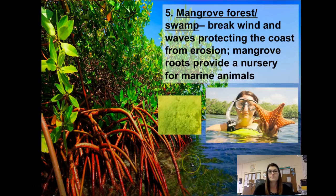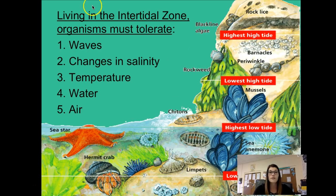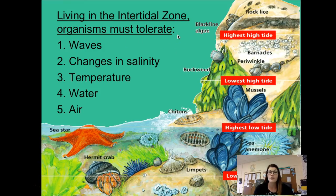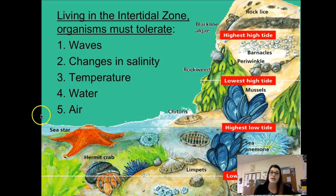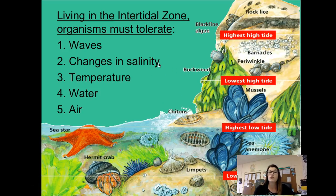Make sure you add in on the left: living in the intertidal zone, organisms must tolerate a variety of environmental factors. Waves are number one — at high tide all these organisms are underwater, but when the tide comes in the water crashes in and puts a lot of pressure and friction on organisms clinging to the rocks. There are also many changes in salinity — the amount of salt in the water goes up and down due to evaporation or flooding.